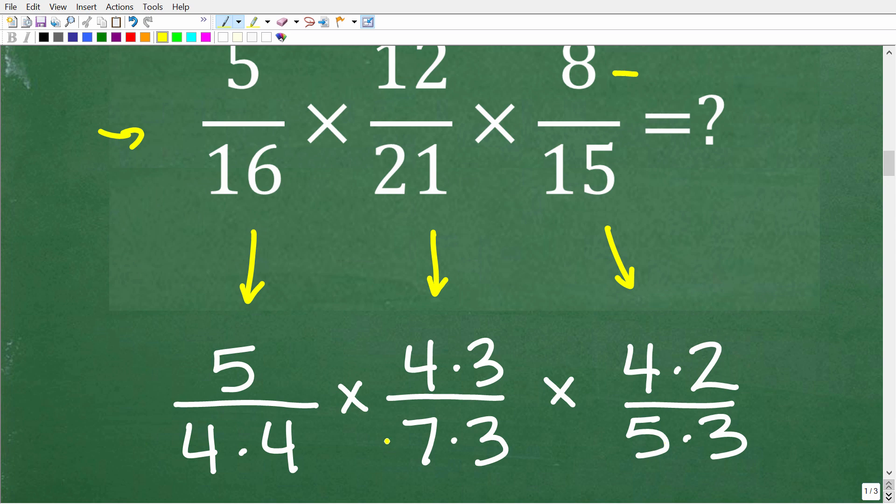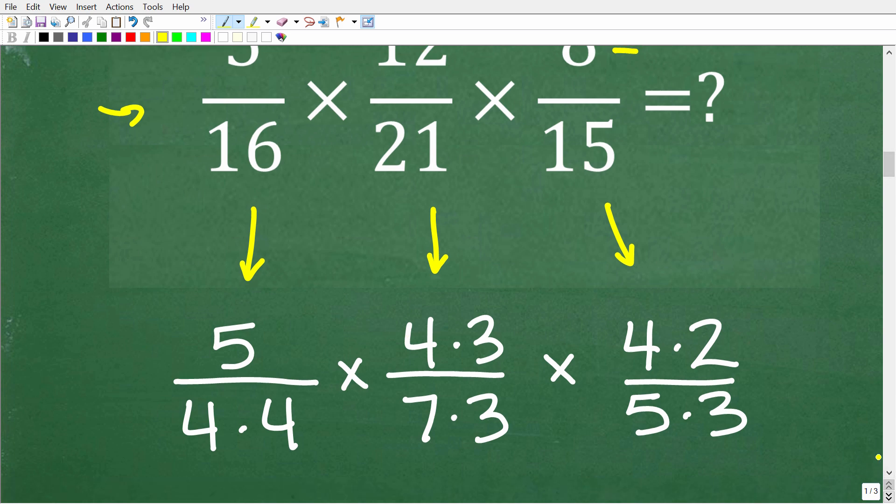Now I thought of these factors in this manner because I know I have a lot of common factors between the numerator and the denominator. So now we can cross cancel a lot of these factors to simplify our product.